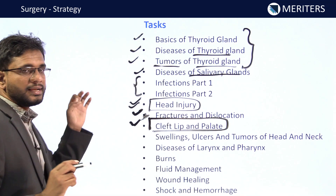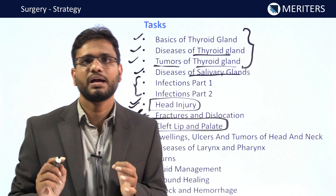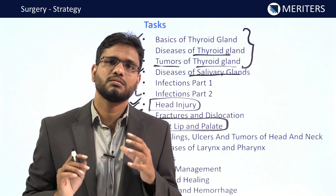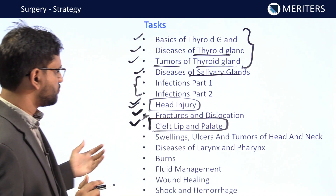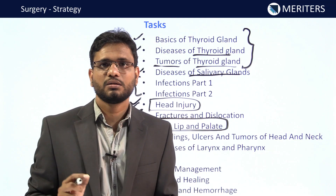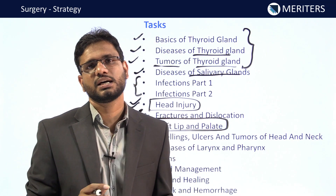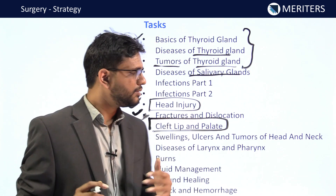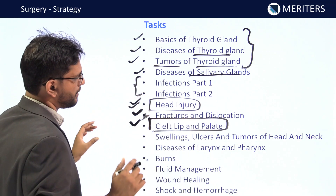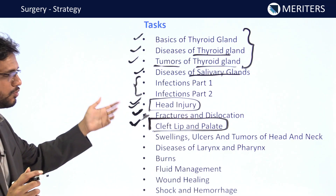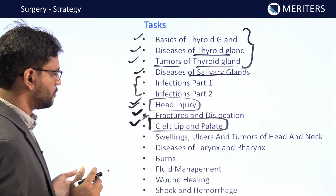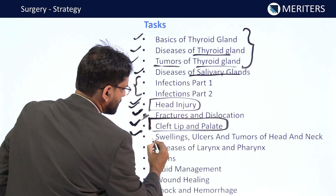Fractures and dislocations are again very important. Then cleft lip and palate — at least one question is guaranteed from this topic. The values from Bailey and Love are considered standard, so always follow those: when should surgery of cleft lip be done, what percentage of cases have combined cleft lip and palate. One question is guaranteed from cleft lip and palate, whether from surgery, oral surgery, or oral pathology.